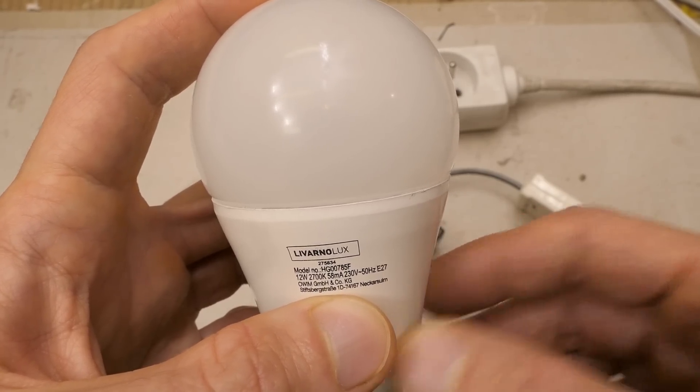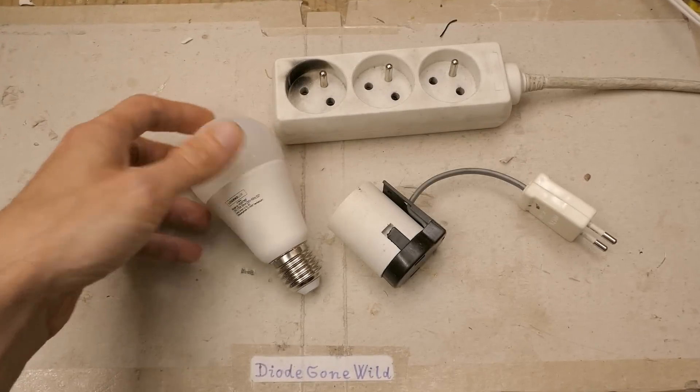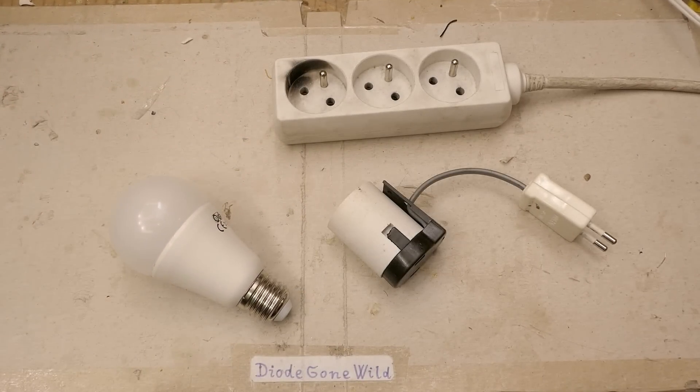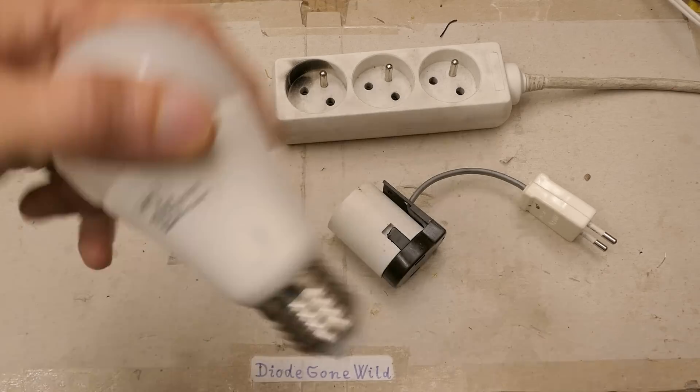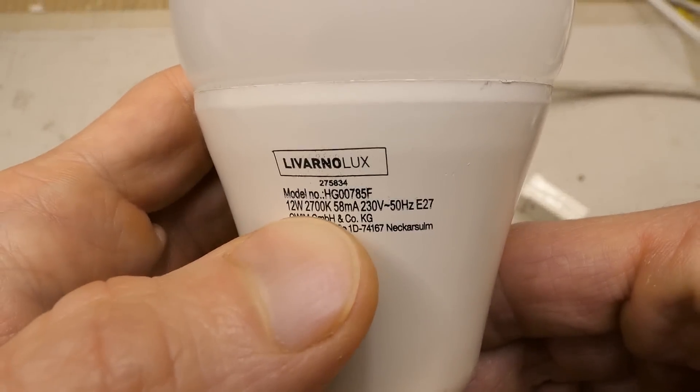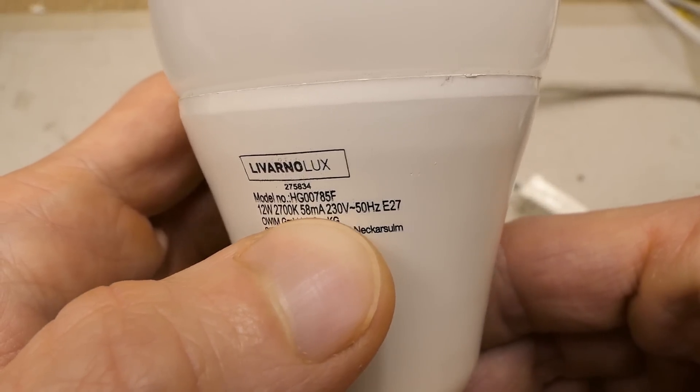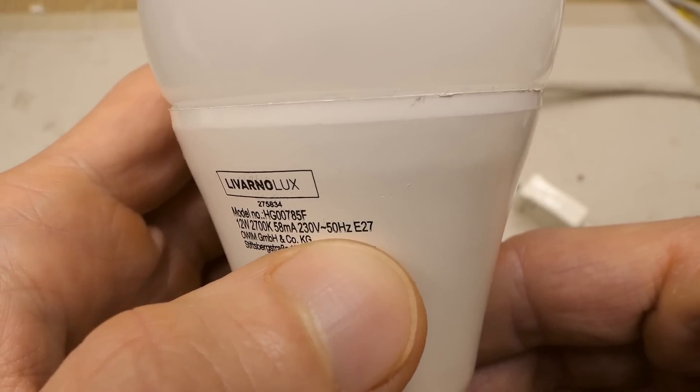A lot of compact fluorescent lamps I installed 10 years ago are still working, and linear fluorescent tubes I installed 20 years ago are still working. This one says 12 watts, 2700 Kelvin, 58 milliamps, 230 volts, 50 hertz, E27 base.